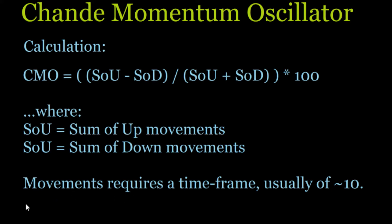Movements inherently implies some sort of timeframe. Usually people use a timeframe of 10 — they consider the last 10 close prices. In our scenario we use just close prices. So with the last 10 close prices, from price one to price two, did we go up or down? If we went up, that would be an up movement. How much of an up movement was that? And so on — you would continue adding them up.